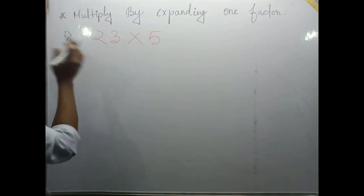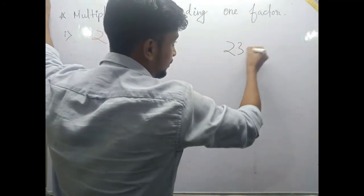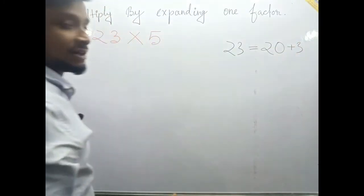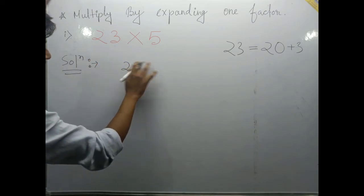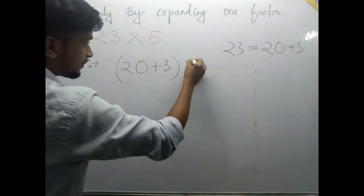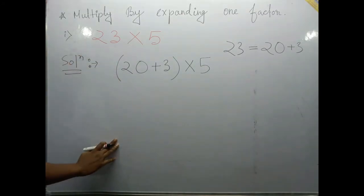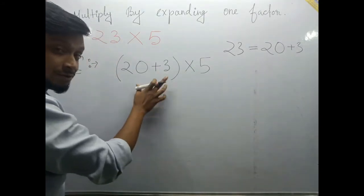Expand means 23, we can write this 23 as 20 plus 3. This is the expansion, right? 20 plus 3. So in the solution we will just write the expanding form of 23, that is 20 plus 3 in brackets. You have to write it obviously. Do not forget to put these brackets.